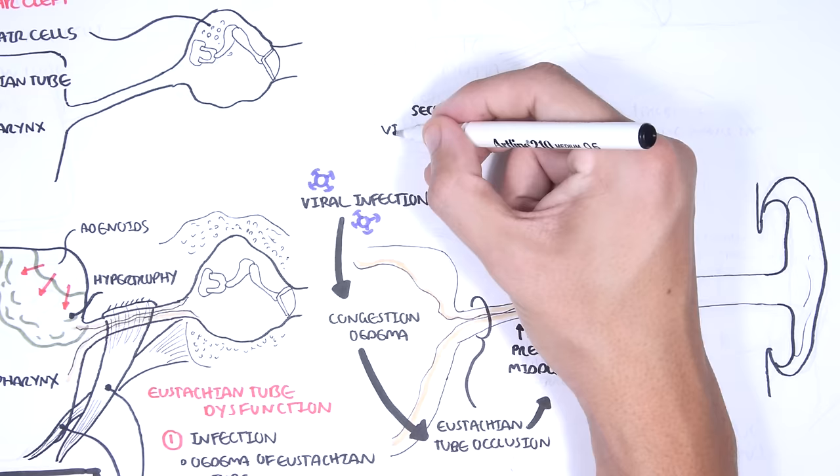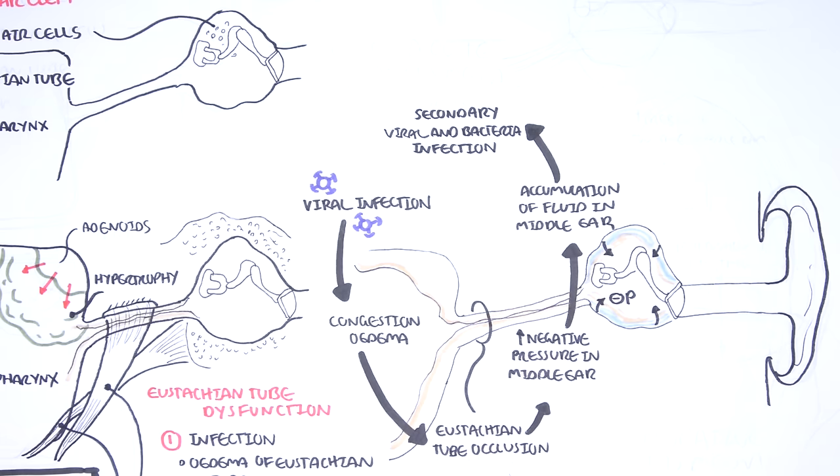Secondary bacterial or viral infections can occur in this environment, which will cause further superation and features of acute otitis media. Remember, acute otitis media is a bacterial or a viral infection of the middle ear. However, in this closed environment, like what we discussed, certain bacteria thrive.